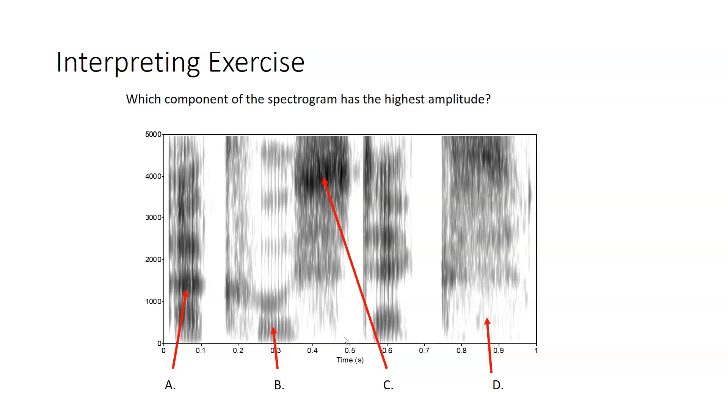Taking that three-dimensional spectrogram information into consideration, here we have an example spectrogram with the question, which component has the highest amplitude? Among the three dimensions, the amplitude is represented by darkness. So, for highest amplitude, we would be looking for the darkest region. And my opinion here would be it's area C that has the highest amplitude.